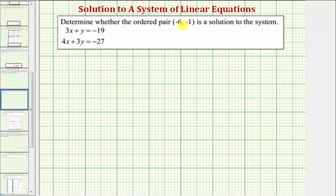We're asked to determine whether the ordered pair negative six comma negative one is a solution to the system. Our system of equations is three x plus y equals negative 19 and four x plus three y equals negative 27.